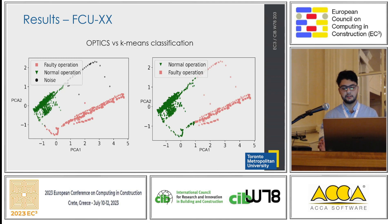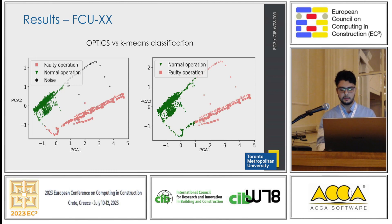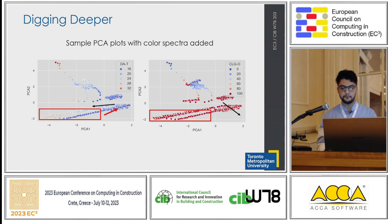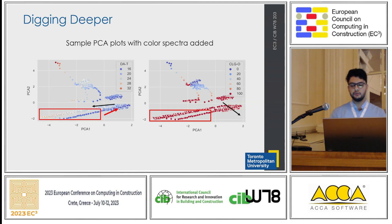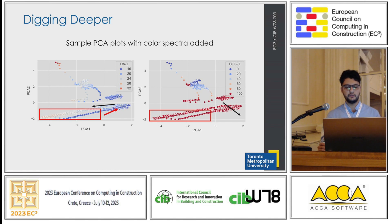However, with reviewing the broader data set, she identified that some faults were missed by both algorithms during the heating season — for example, from December 28 to December 29. In order to dig deeper, we used the Pearson correlation coefficient to find the correlation between the features.